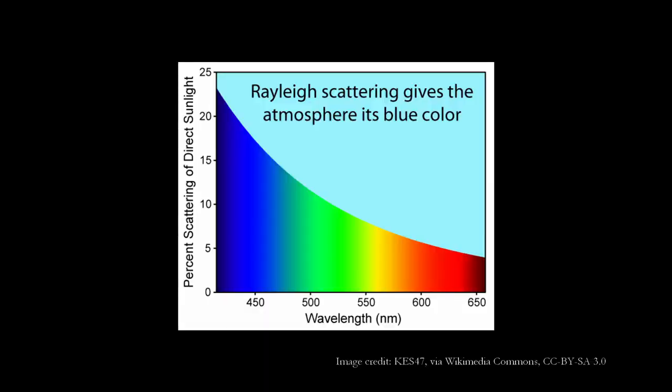Because of how light interacts with matter, longer wavelengths are less likely to impact an air molecule. A plot of the probability of scattering versus the wavelength shows that violets and blues are over four times more likely to be scattered compared to oranges and reds.